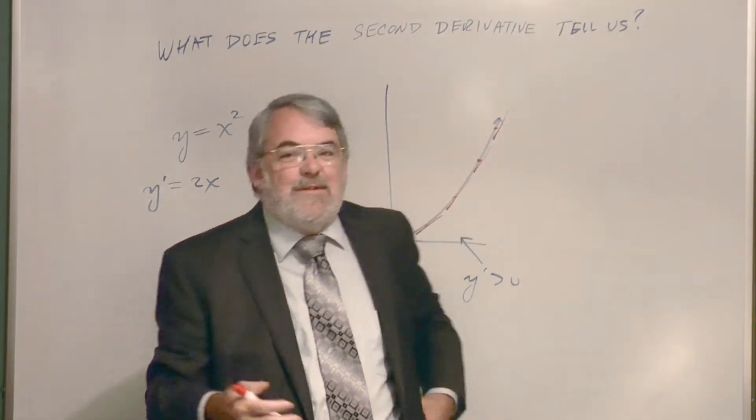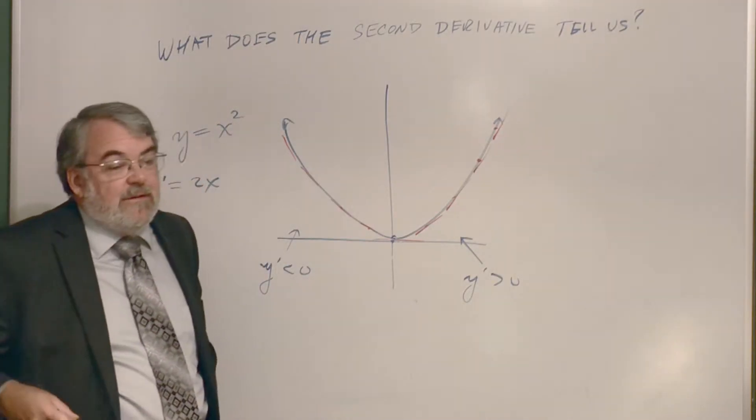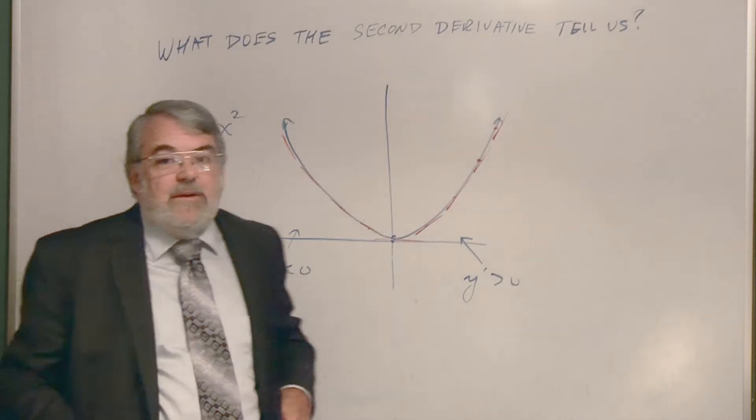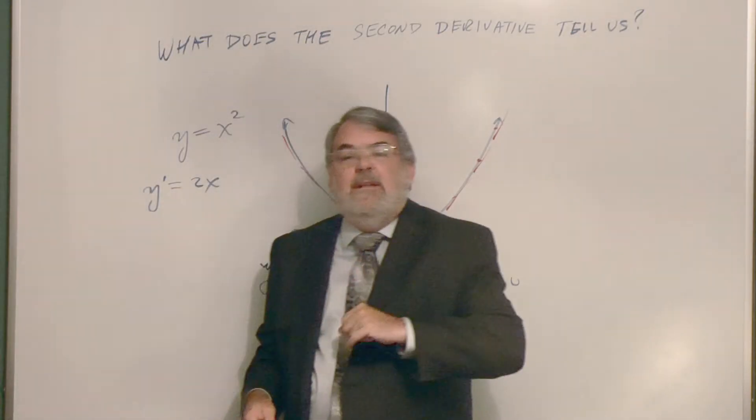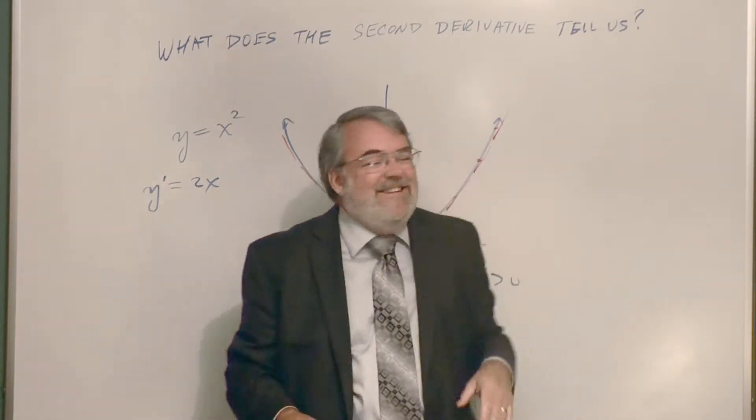That's the second derivative. So the rate of change of the first derivative is the second derivative. And if the second derivative is always positive, that means those tangents are increased, the slope values are increasing.